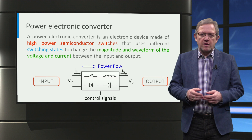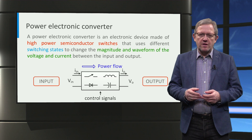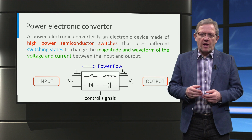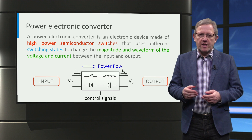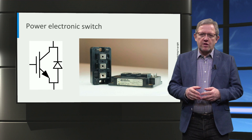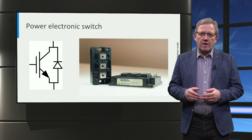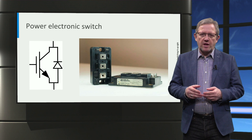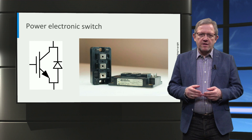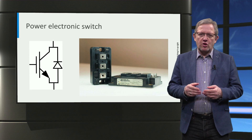A power electronic converter is an electronic device made of high power semiconductor switches that uses different switching states to change the magnitude and waveforms of the voltage and current between the input and output. A semiconductor switch is the basic building block of any power electronic converter. We can see the schematic representation and real photo of a semiconductor switch — in this case it is an isolated gate bipolar transistor, or IGBT in short.